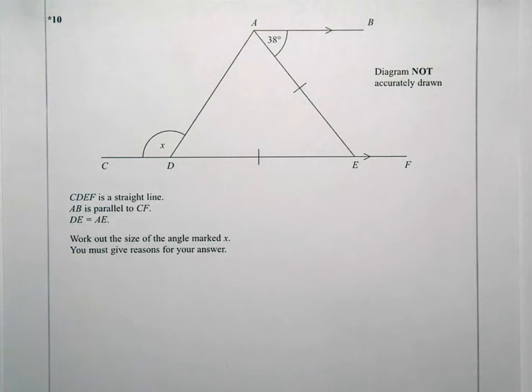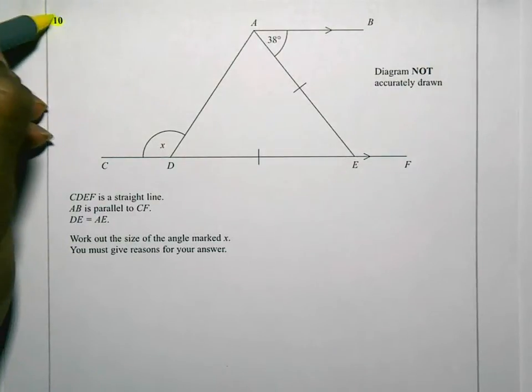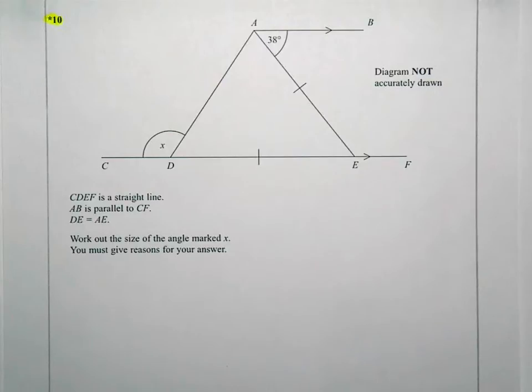Okay, here's question 10 on the higher non-calculator paper. The first thing I recognize here is there's a star next to the question number, and what that means is there's marks for quality of written communication. What that means is they need me to present my answer clearly, to indicate exactly what's happening, exactly what I need to do, and to work through the answer in a systematic way.